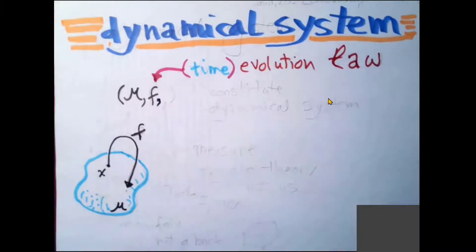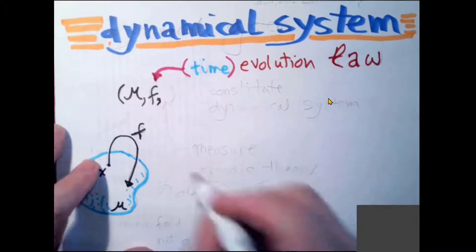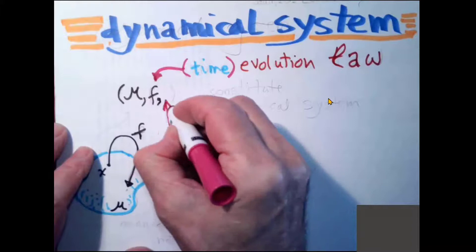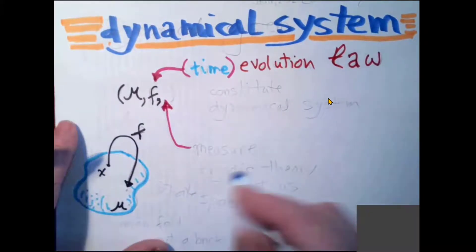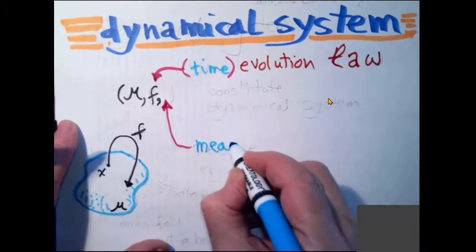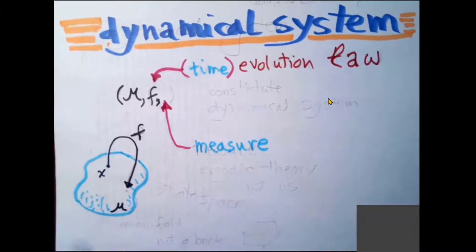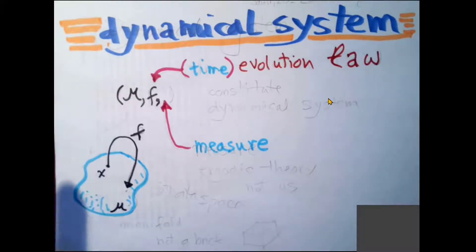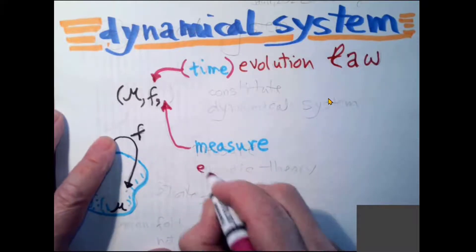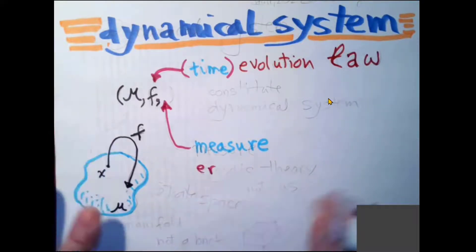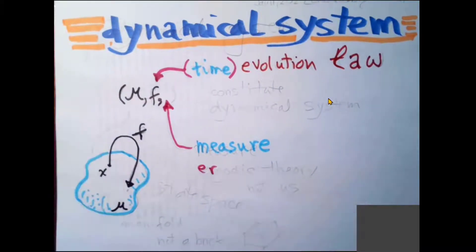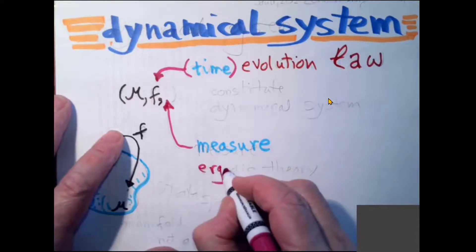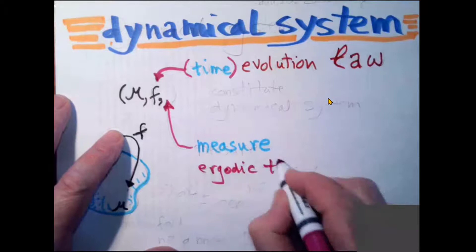Now if this were a math course — which this is not, but I'm contractually obligated to be honest — I would specify something called a measure. But I find I don't need to define this for what we want to do here. It says it's not enough to have a state and a law; you also have to tell me how you get your hands on this state. I find that it gets in my way, so I will ignore it.